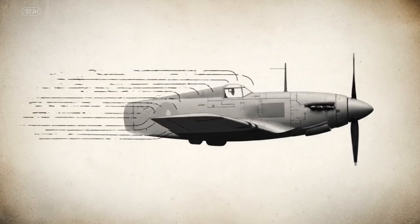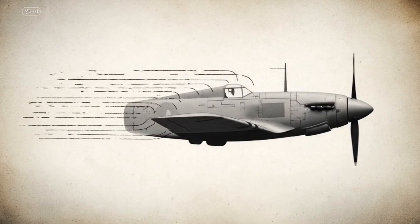As control surfaces moved, the airflow amplified the motion instead of damping it. Small vibrations became violent oscillations. Forces fed into themselves. In seconds, stable flight turned catastrophic. This phenomenon did not exist in classical flight theory. It had no name. And without a name, it had no solution. Engineers were trapped between physics and urgency. War demanded faster aircraft. Speed exposed instability. Instability destroyed airframes. No one could explain the chain clearly enough to stop it.